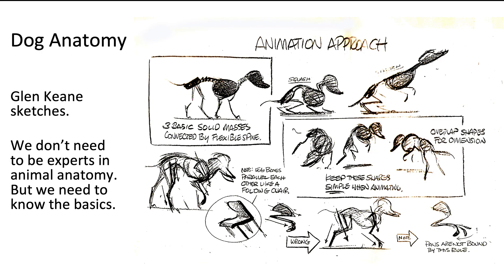This particular quadruped is a dog, so Glenn is really showing how to get squash and stretch into the body, how to develop simple shapes, and how to get parallel shapes in the shoulders and the legs folding — kind of like a folding chair. He's got some notes on how to do things wrong and other notes on how to do things right.